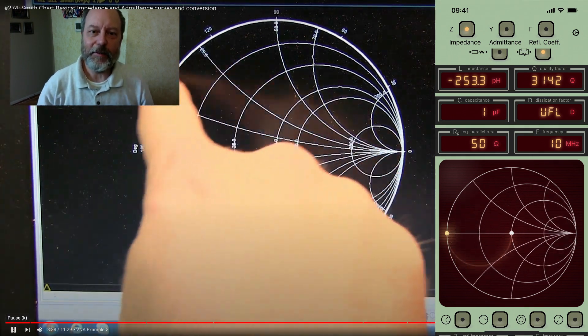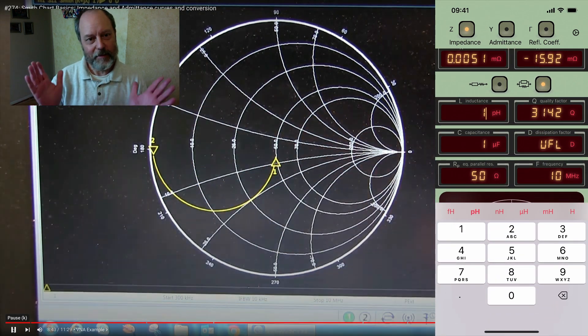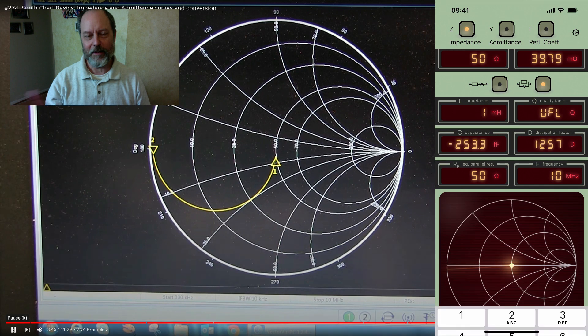And as you might expect, you can also trace out a shunt inductor and get a trace in the app that's similar to what Alan produces with his VNA as well.